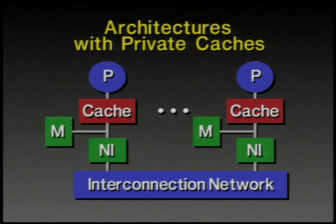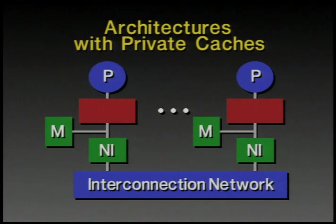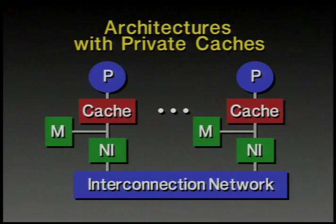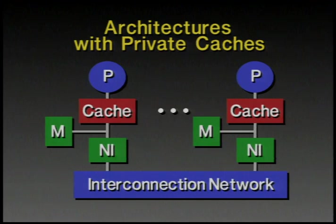An architecture with private caches that does not cache shared data would contain caches for only private data, meaning accesses to remote data would have to go through the interconnection network to remote memory. Some examples of these kinds of machines are the IBM RP3 and the BBN Butterfly. These machines feature a distributed memory, may even use caches, have a single address space across those distributed memories, and need a scalable interconnection network.